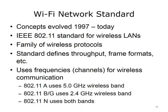The Wi-Fi network standard relates to wireless devices. It began its evolution in 1997 and continues today. Wireless communication is based on the 802.11 standard for wireless local area networks, or LANs. Wi-Fi and 802.11 are synonyms, referring to the family of wireless protocols: 802.11 A, B, G, and the Draft N protocol. The 802.11 standard defines throughput and frame formats for wireless communication equipment. It governs how electronic communication gets from a computer through the wireless NIC and into the air, just as 802.3 governs wired communication from NIC onto wire.